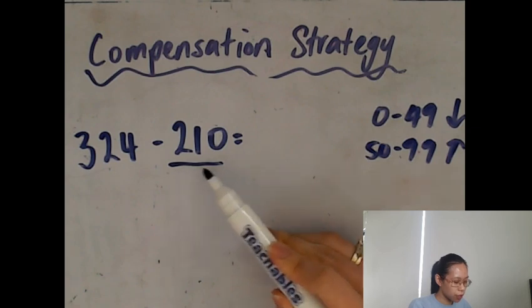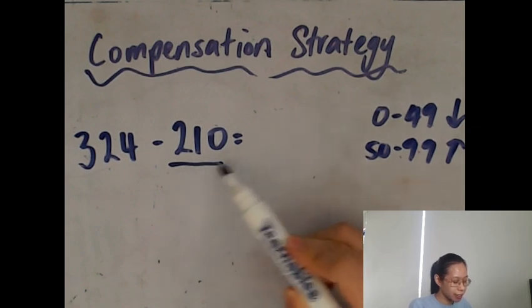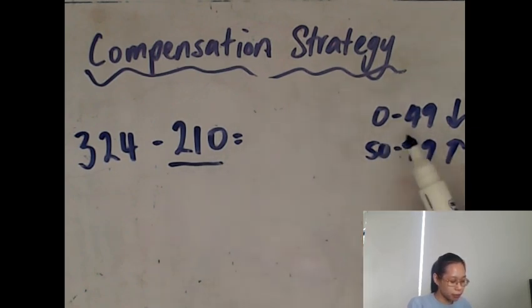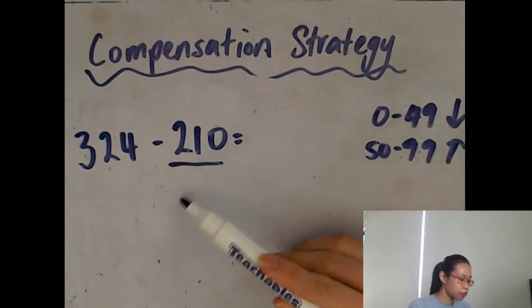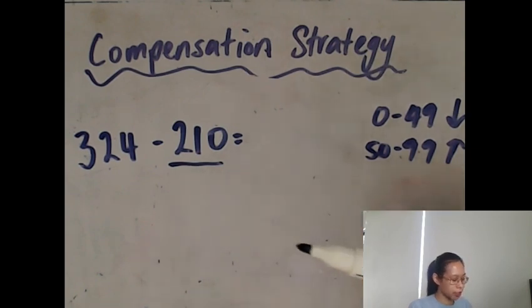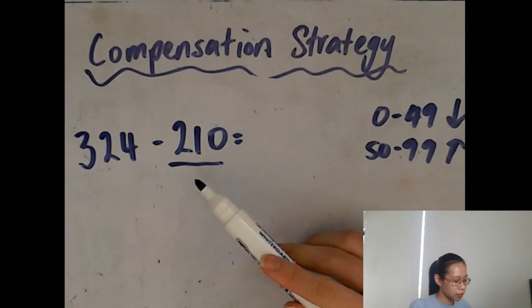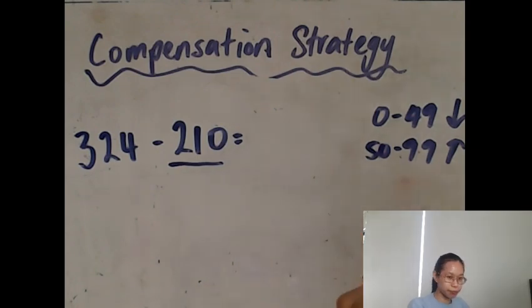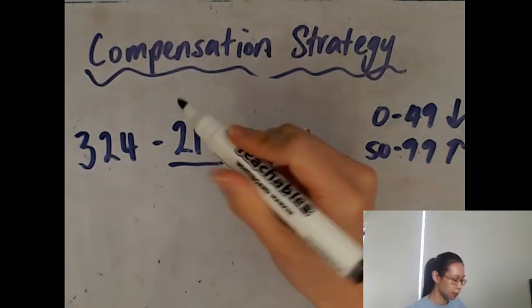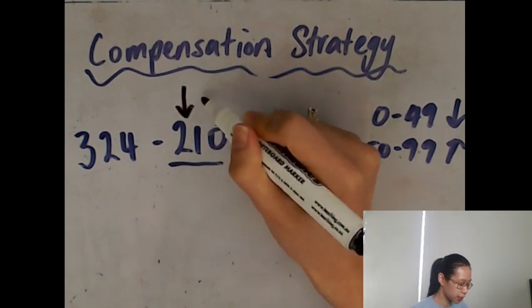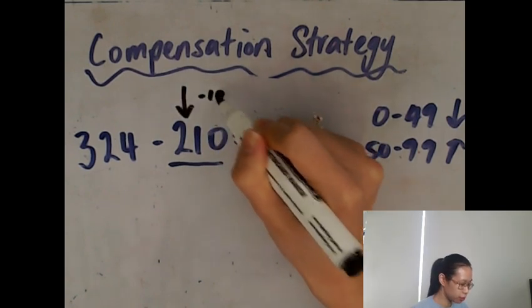So with this, it's 210, so 10 is between 0 and 49, so you round down to your nearest hundreds. Your nearest hundreds are either 200 or 300, so you need to see which one it's closer to. 210 is closer to 200, so I would round down, and then I'm going to do minus 10.